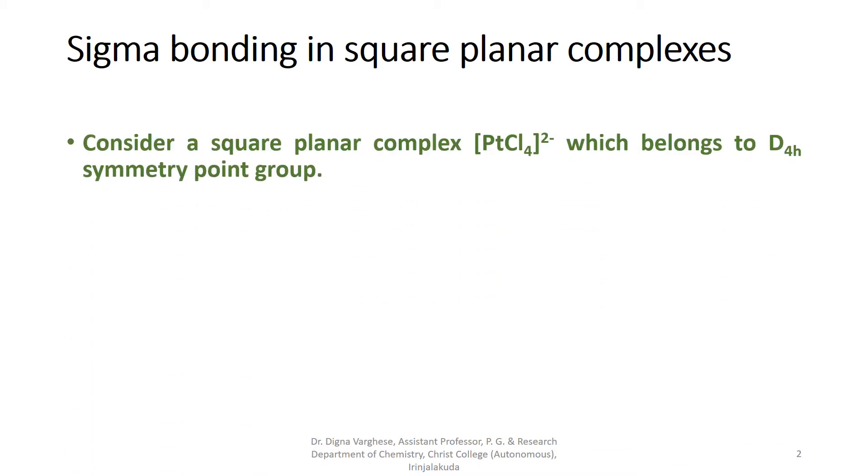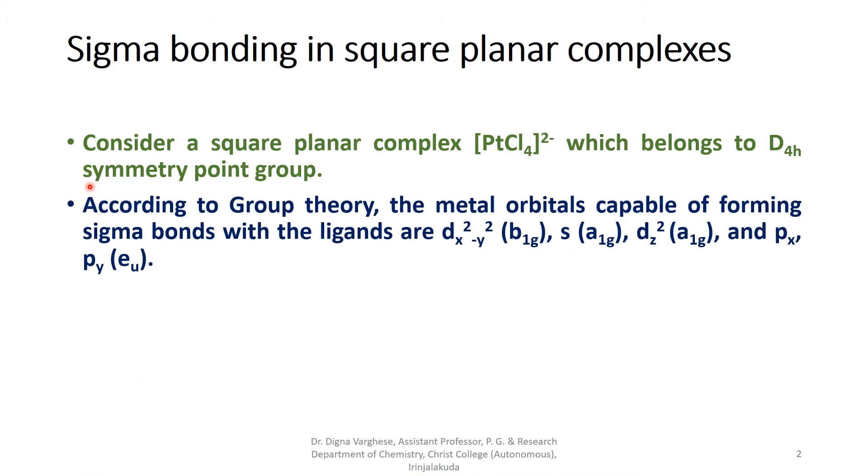Consider square planar complexes, tetrachloride of platinum 2 ion, which belongs to D4H symmetry point group. According to group theory, the metal orbitals capable of forming sigma bonds with the ligands dx square y square that can be changed as according to the character table B1g, S is A1g and Dz square A1g and Px, Py, Eu.